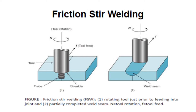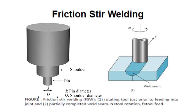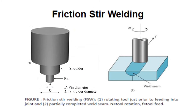In this system, the tool consists of a cross-section area of shoulder and pin, which is rotated at a certain speed and inserted at the welding area.